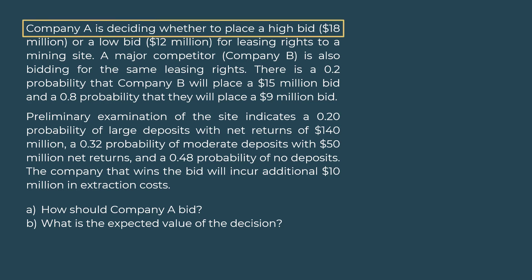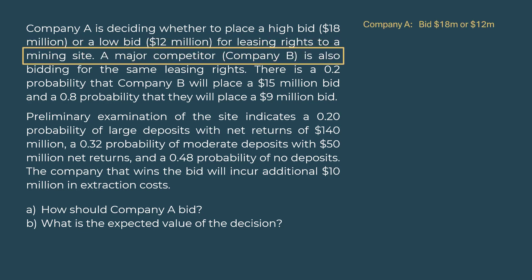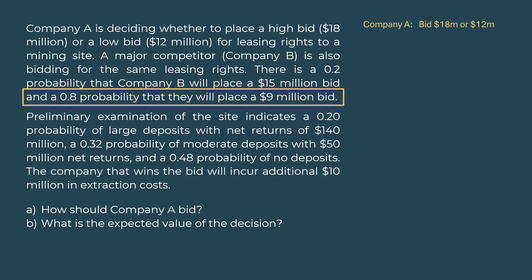Company A is deciding whether to place a high bid of $18 million or a low bid of $12 million for leasing rights to a mining site. A major competitor, Company B, is also bidding for the same leasing rights. There is a 0.2 probability that Company B will place a $15 million bid and a 0.8 probability that they will place a $9 million bid.